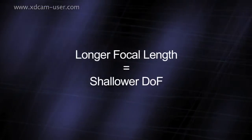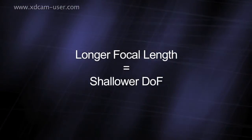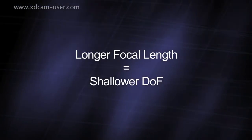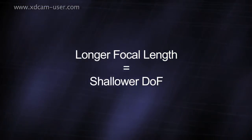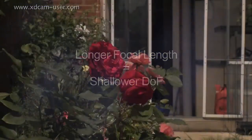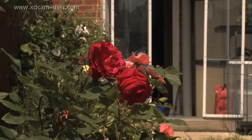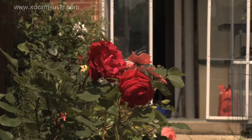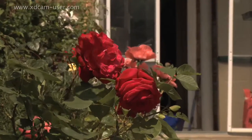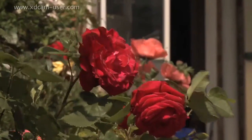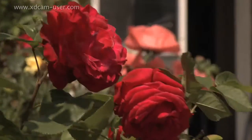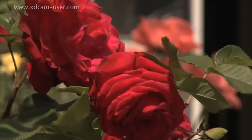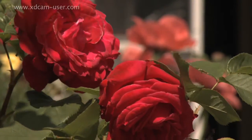The focal length of the lens also has an effect on depth of field. As you zoom in, the depth of field becomes shallower, as can be seen here where the distant flowers become blurred as the camera zooms in.